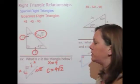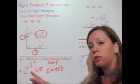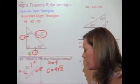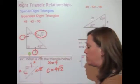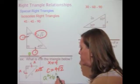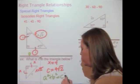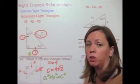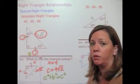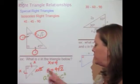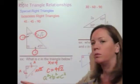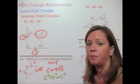By the way, if they give you both of those two equal sides, another approach is using the Pythagorean theorem. It will always work when you know two out of three sides of a right triangle. It just so happens these two sides are the same, so you'd have 4 squared plus 4 squared equals c squared.